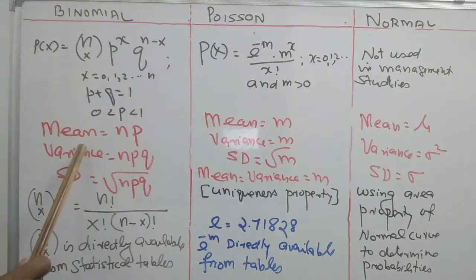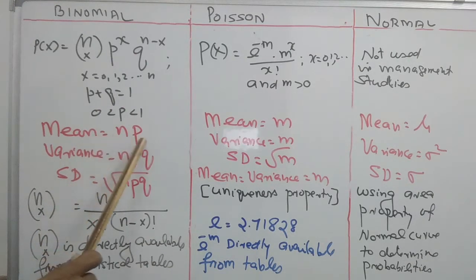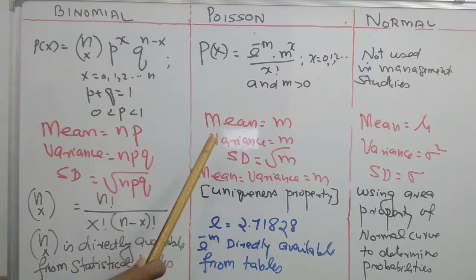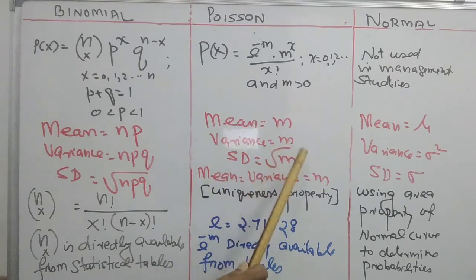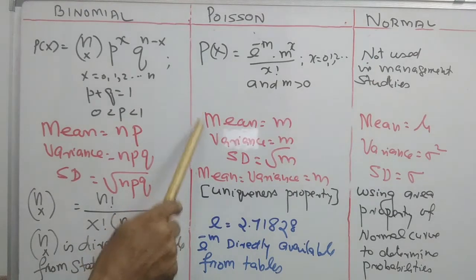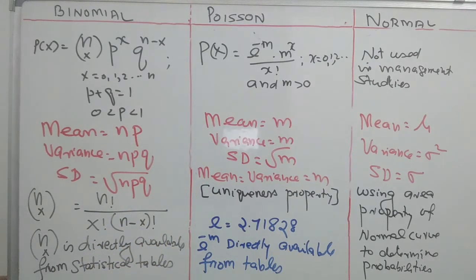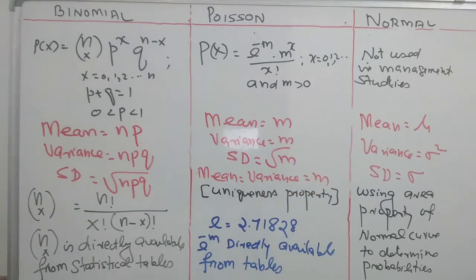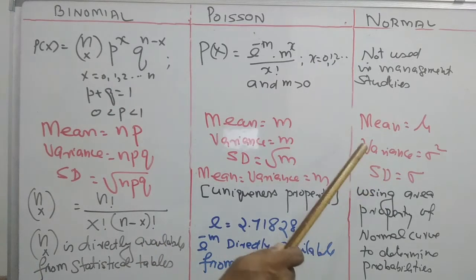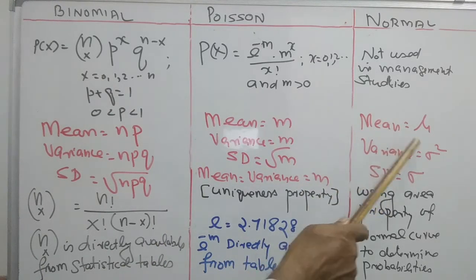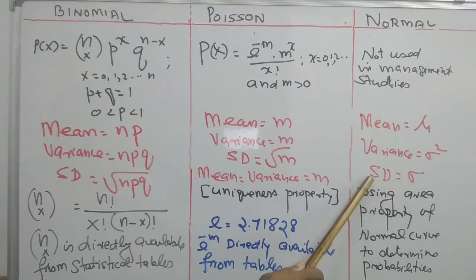For binomial distribution, the mean is np, variance is npq, and standard deviation is √(npq). For Poisson distribution, mean is m, variance is m, and standard deviation is √m. The fact that mean equals variance is a special case — termed the uniqueness property of Poisson distribution. For normal distribution, parameters are mu and sigma squared: mean is mu, variance is sigma squared, and standard deviation is sigma.